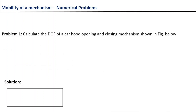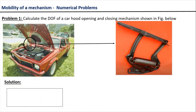Let us take the first numerical problem. In the picture, you can see a car hood hinge mechanism has been shown. This hinge mechanism helps in smooth opening and closing of the car hood. This system is shown in this diagram, and we will try to figure out the degree of freedom of this car hood hinge mechanism. The first step will be to draw the kinematic diagram for this mechanism.